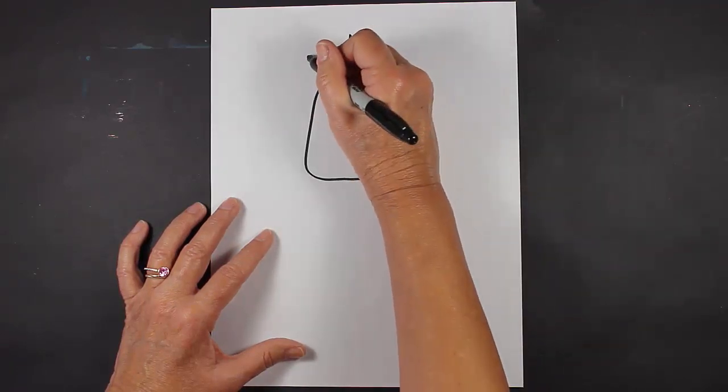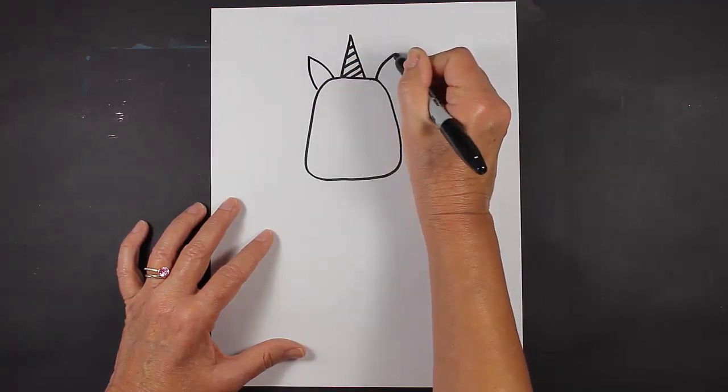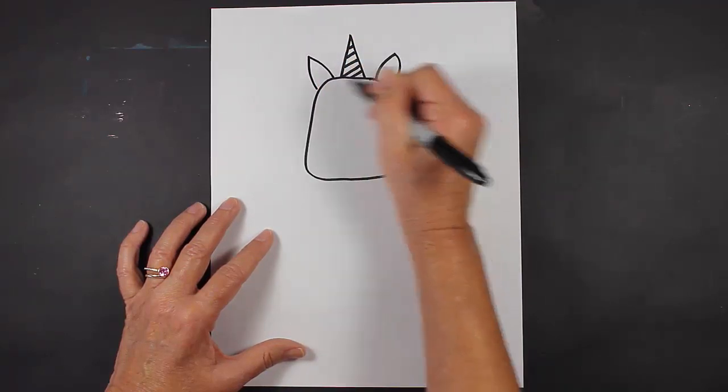Then let's put some ears on our unicorn. Those are just curved lines that are hooked together.